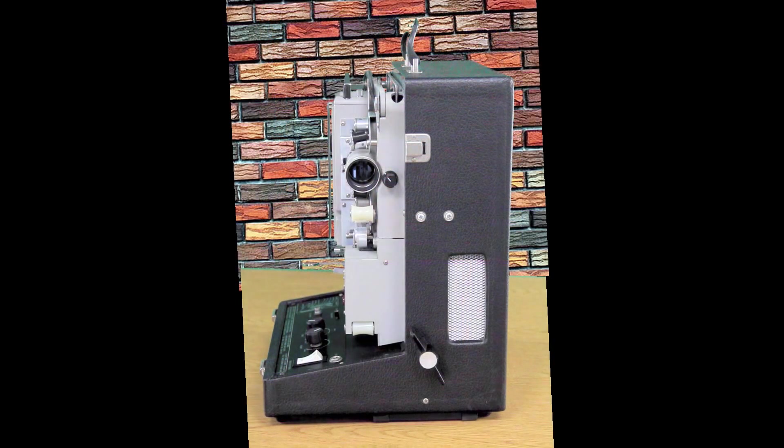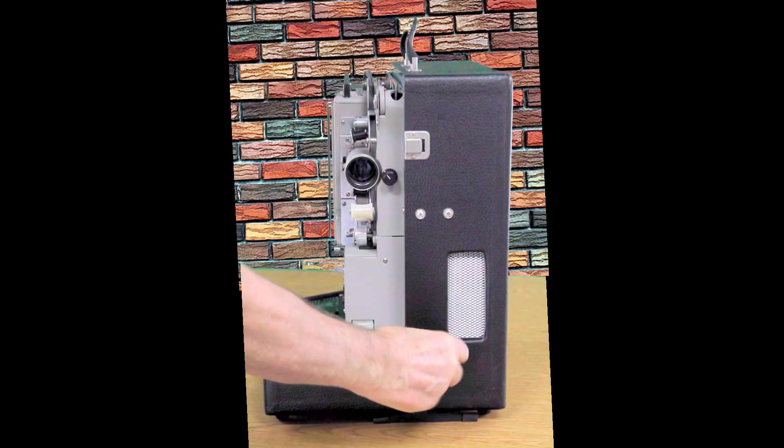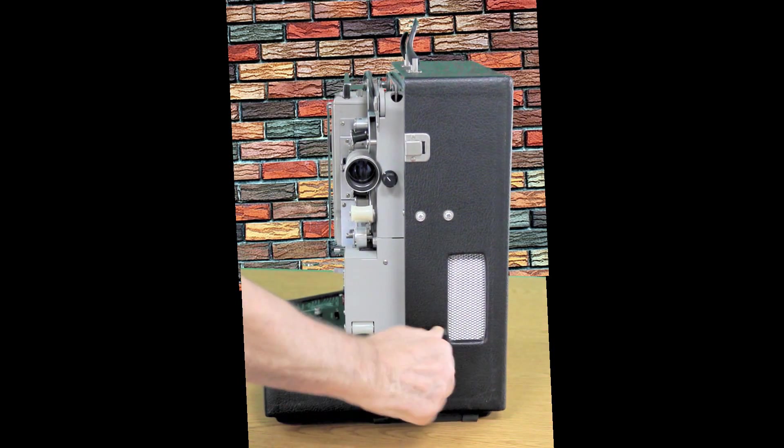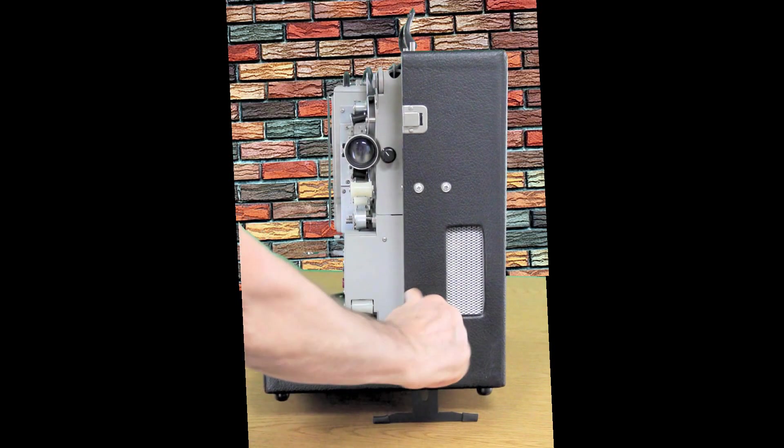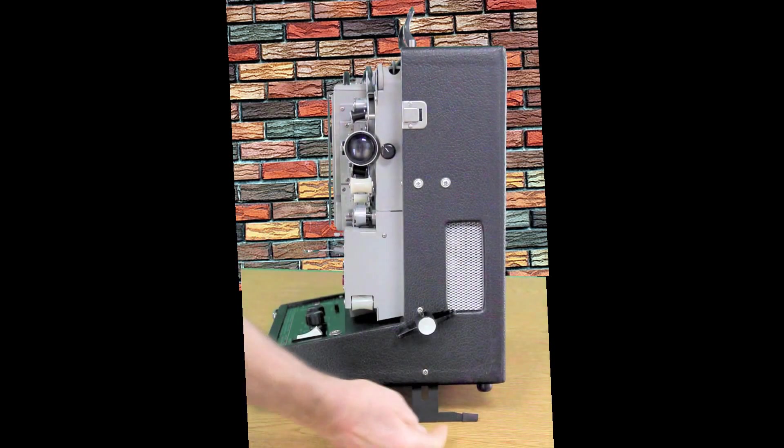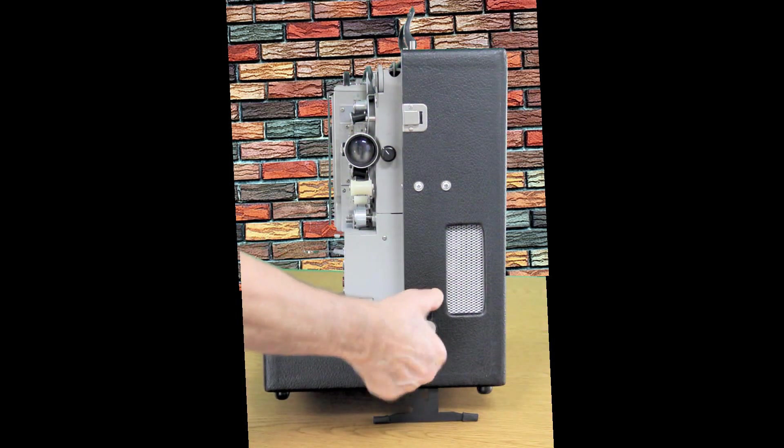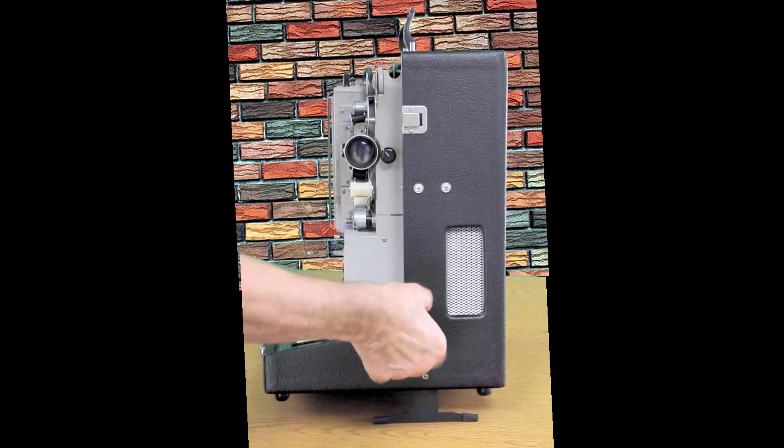On the front of the camera, there's a black knob. When you turn it, you can tilt the camera. It's got a padded leg that comes out so you can line it up with the screen or whatever background you're going to show the movie.